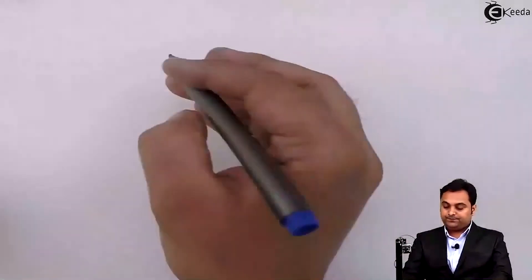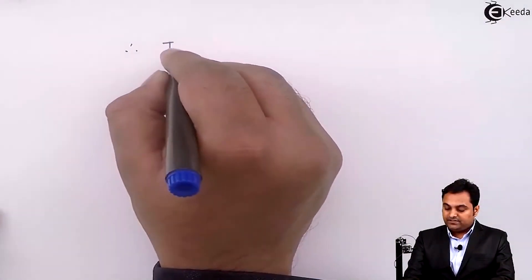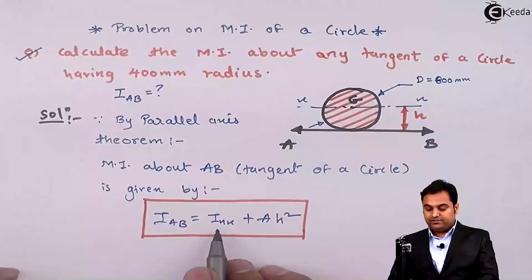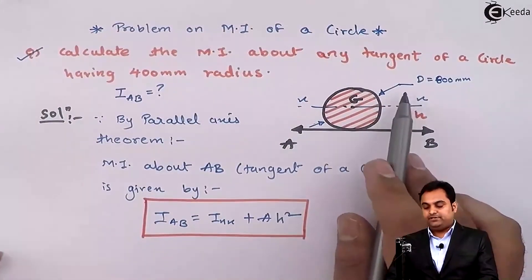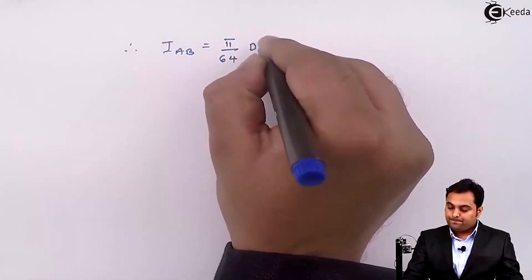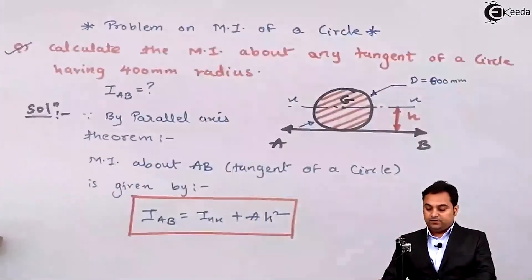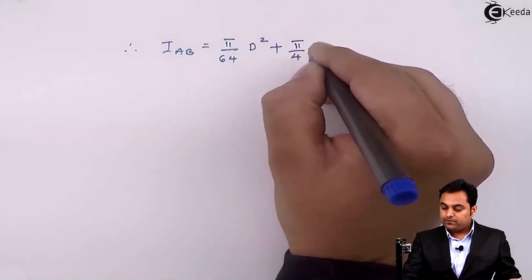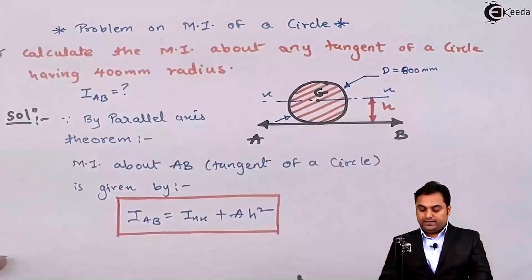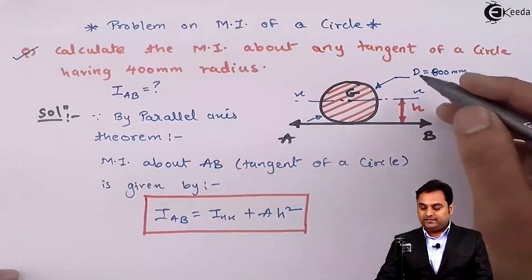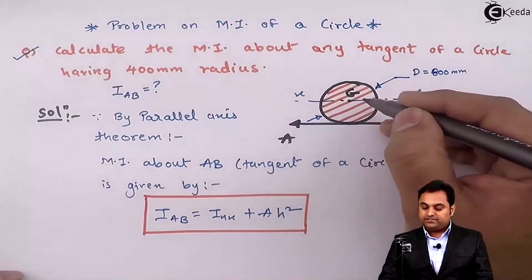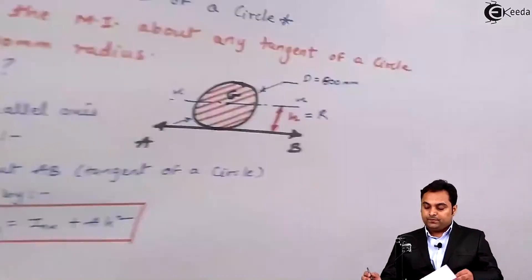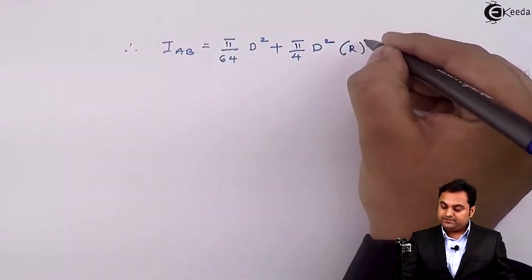So I_AB equals I_XX for a circle, which is π/64 times D to the power 4, plus the area of the circle, which is π/4 times D squared, times h squared. It is clearly seen that h is the distance from the center up to AB, so h equals the radius, and therefore h squared equals radius squared.